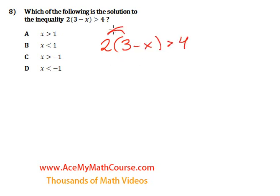First step, let's distribute the 2. 2 times 3 is 6. 2 times negative x is negative 2x. And that's greater than 4.